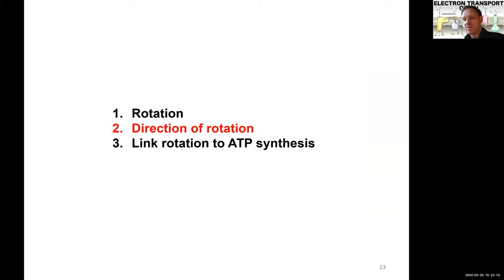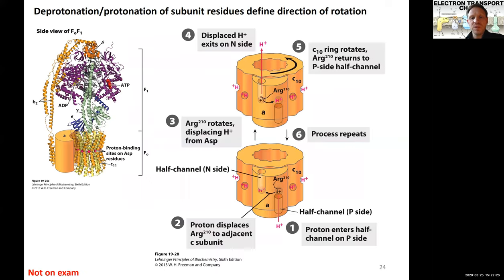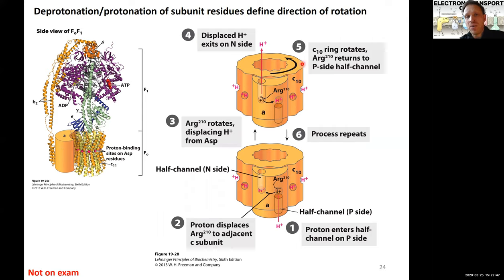Now that we understand why the flow of protons is critical to drive this rotor, we can look into the mechanism. I'll only ask you to understand the foundational part, not all its details. The F0 unit is here, and here is the shaft again — this is the rotator that is moving. On the right you have only the rotor and an alpha domain. The alpha domain is actually where the protons will flow through.